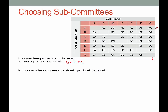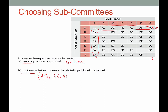List the ways that teammate A can be selected to participate in the debate. We want to be very careful with the language here — this says list the ways, which means we actually have to formally write it out. We'll use first initials and list them in braces. So: Anna-Bob, Anna-Christopher, Anna-Dawn, Anna-Evelyn, Anna-Frank, Anna-Gary. Those are all the possibilities where Anna is the chief debater.